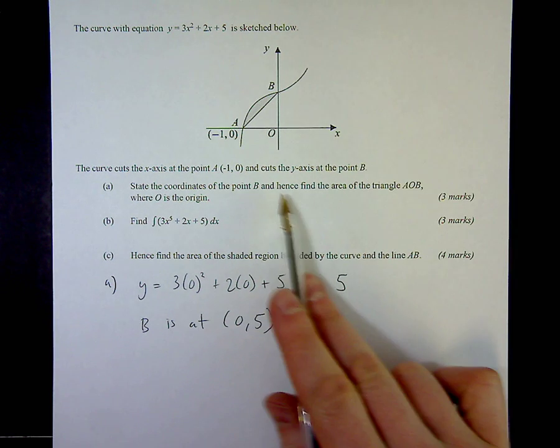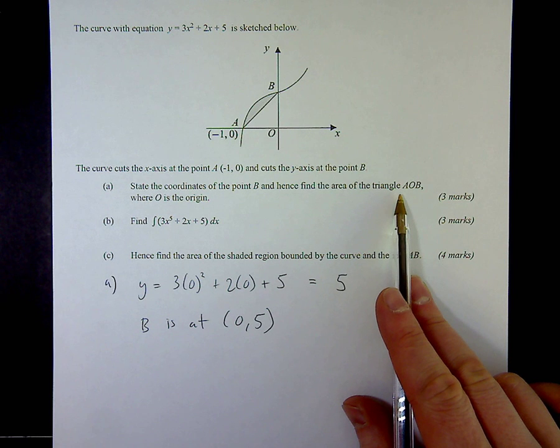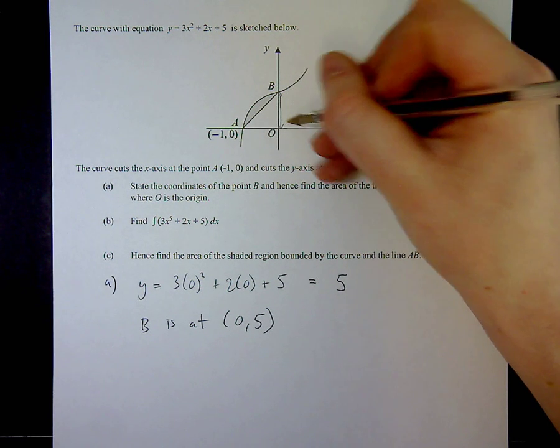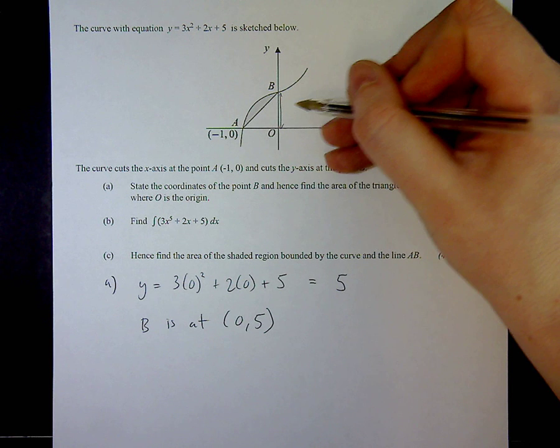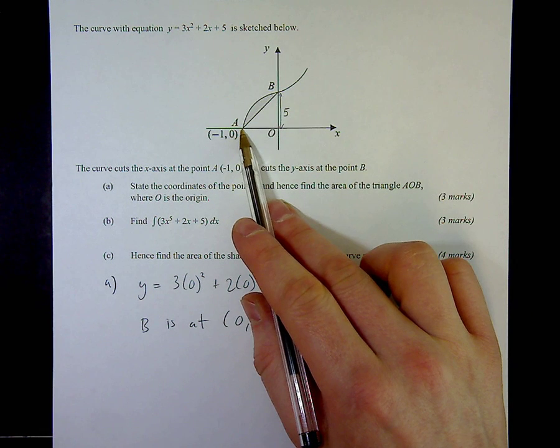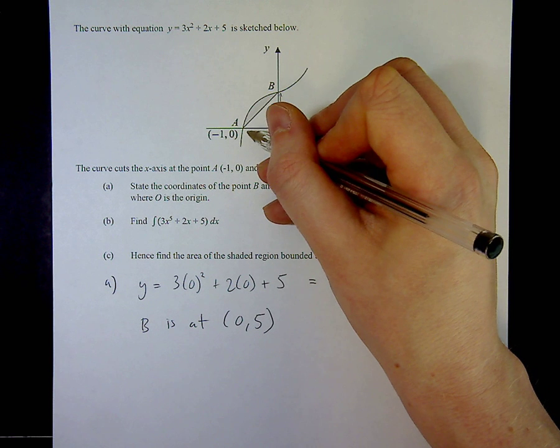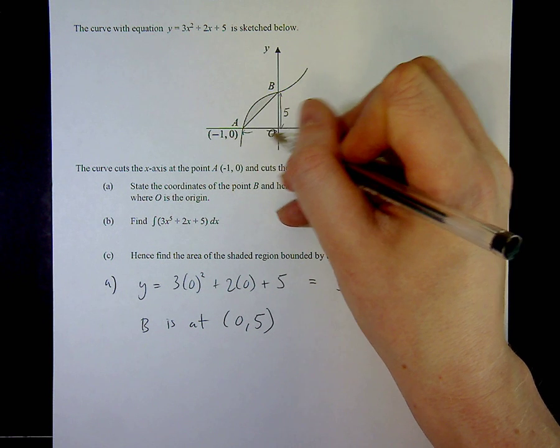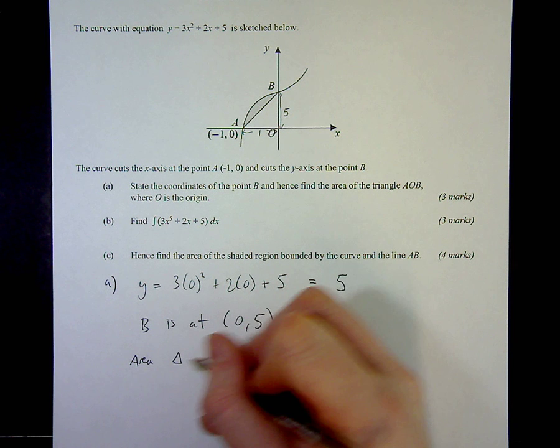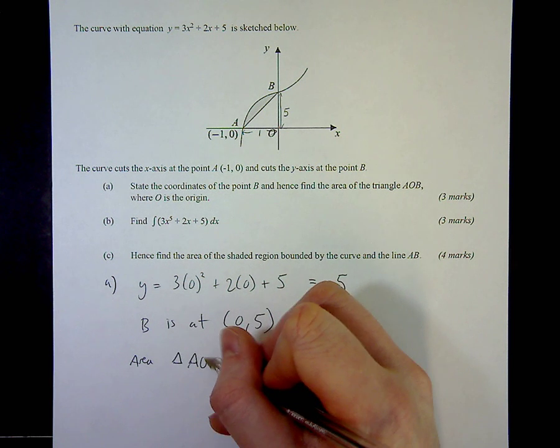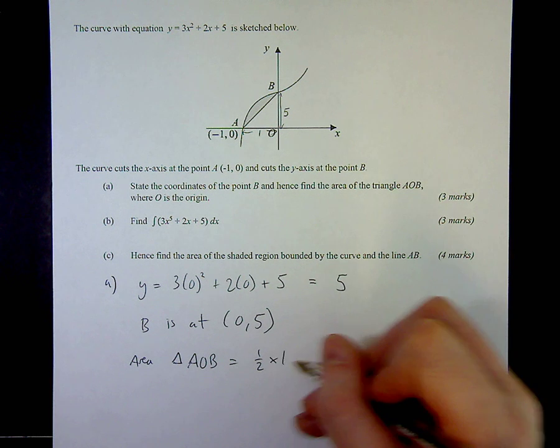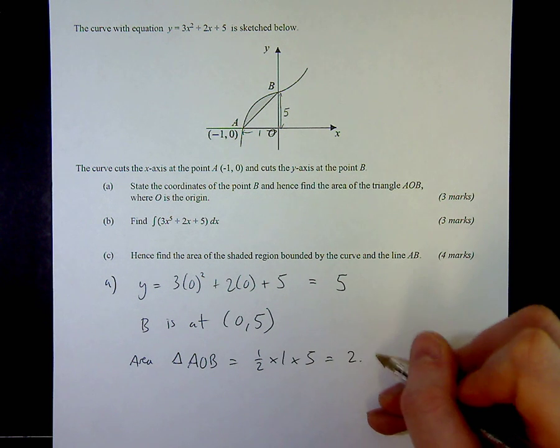It then says hence find the area of the triangle AOB. Well, if I look at the sides of the triangle, if it cuts the y-axis at 5, that must have a height of 5, and it cuts at negative 1, 0, so it must have a base of 1. So area of the triangle AOB is going to be a half base times height, so a half times 1 times 5, which is 2.5 square units.